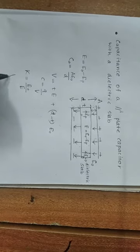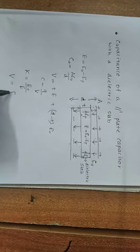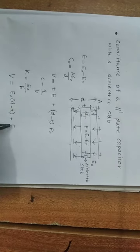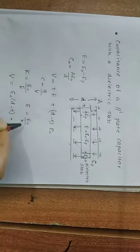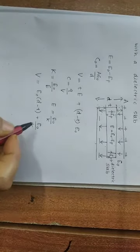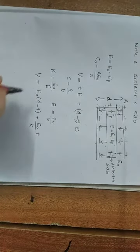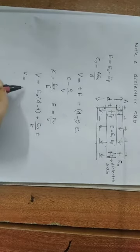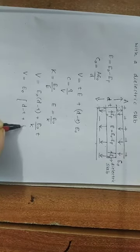Substituting E equals E0 by K into the potential difference expression: V equals E0·(D minus T) plus (E0/K)·T. Taking E0 as common, V equals E0 into (D minus T plus T by K), where K is the dielectric constant of the material.